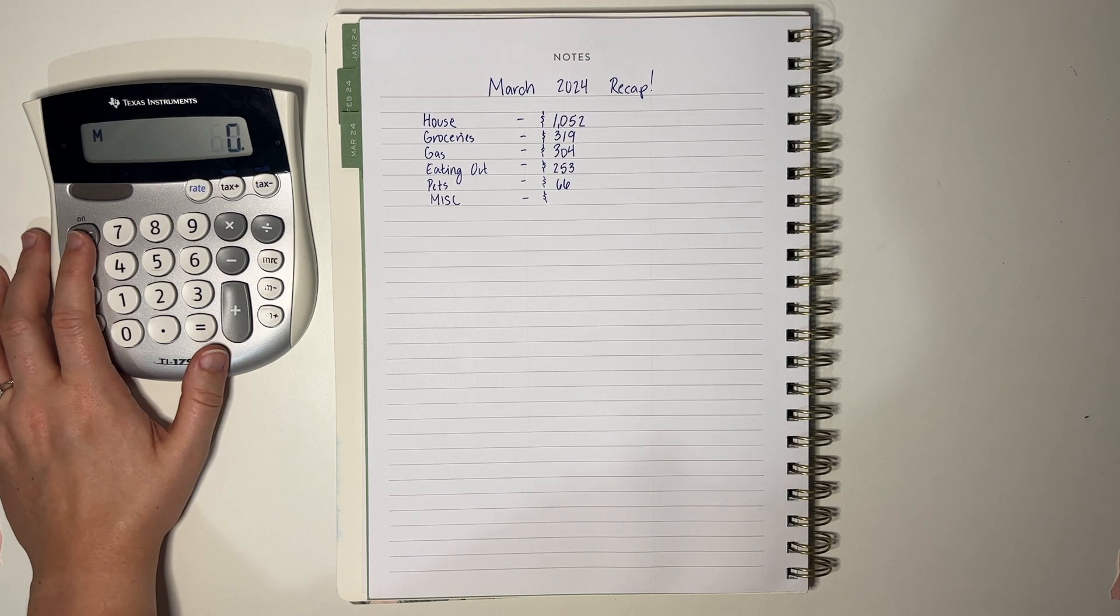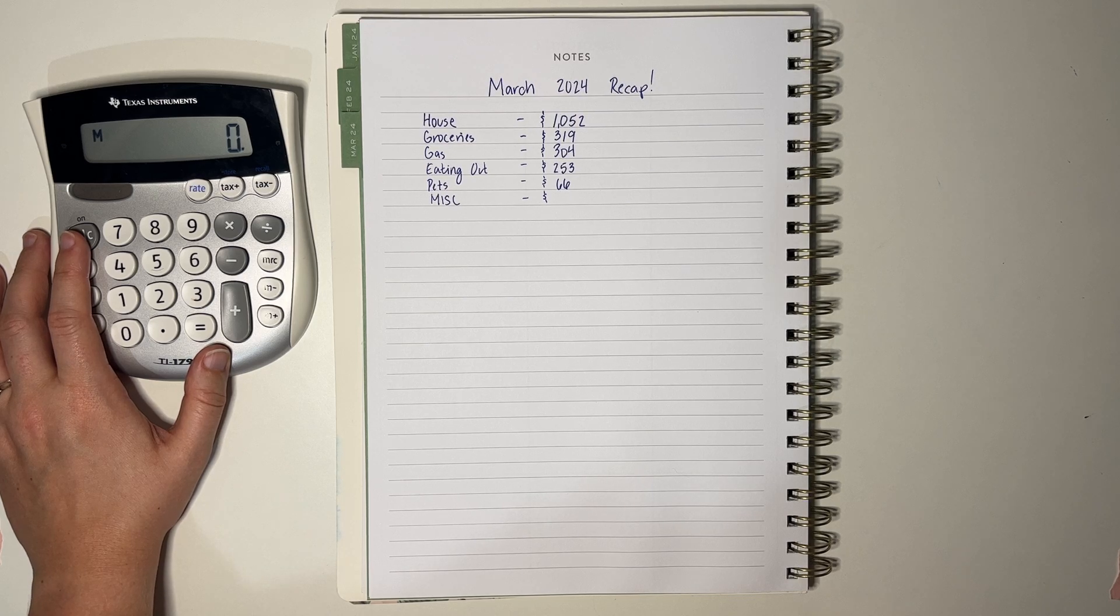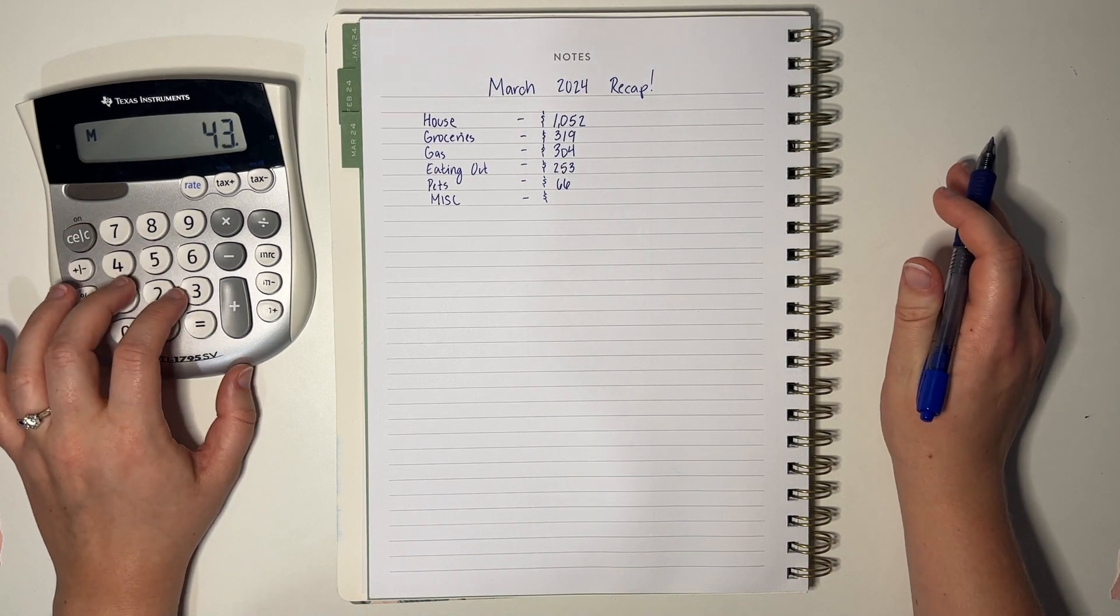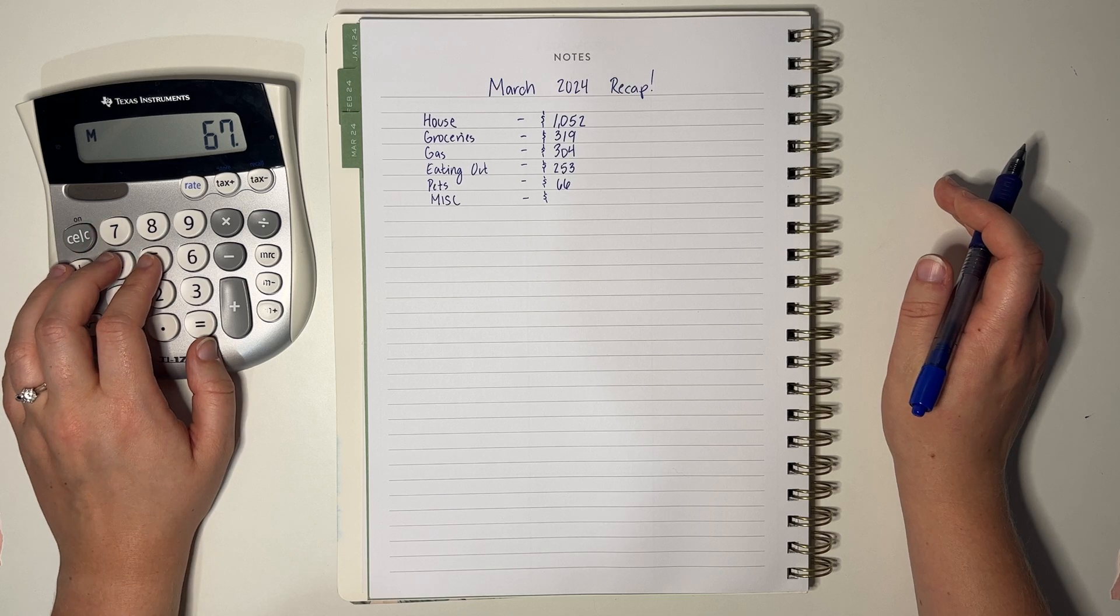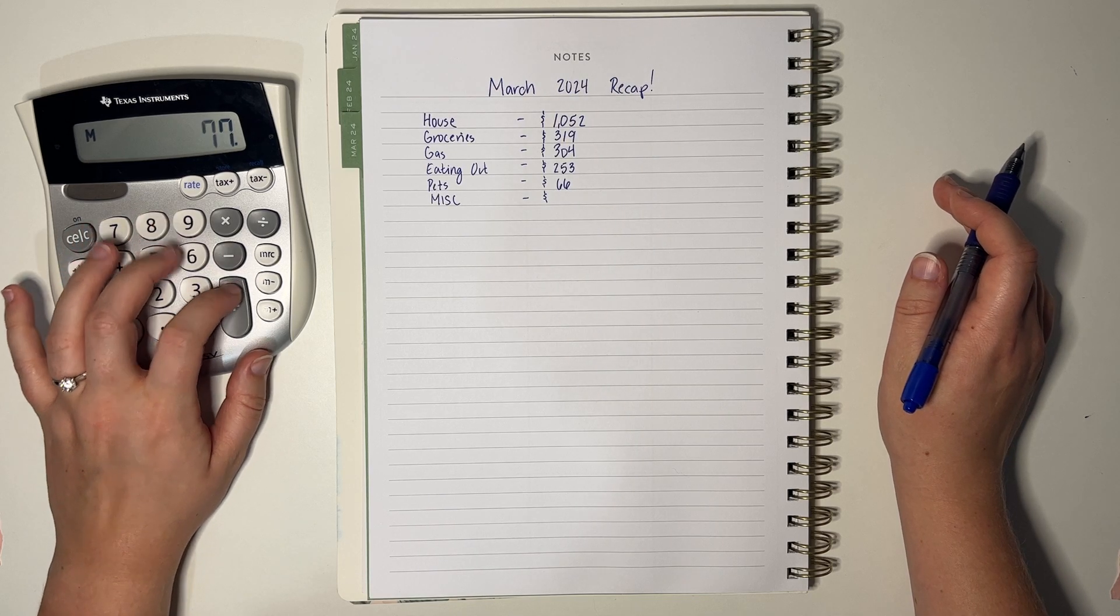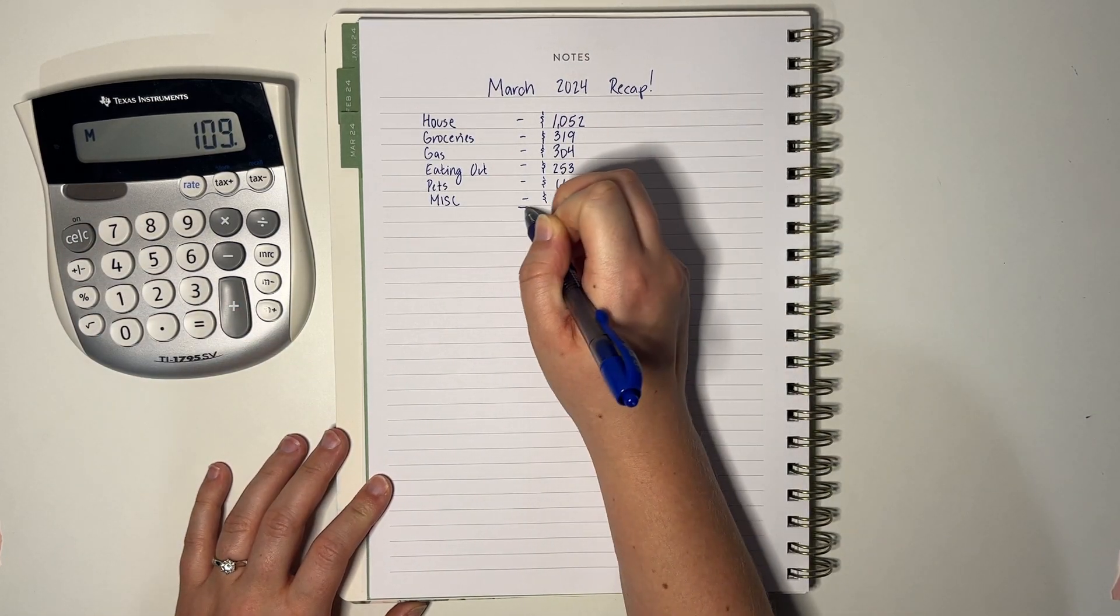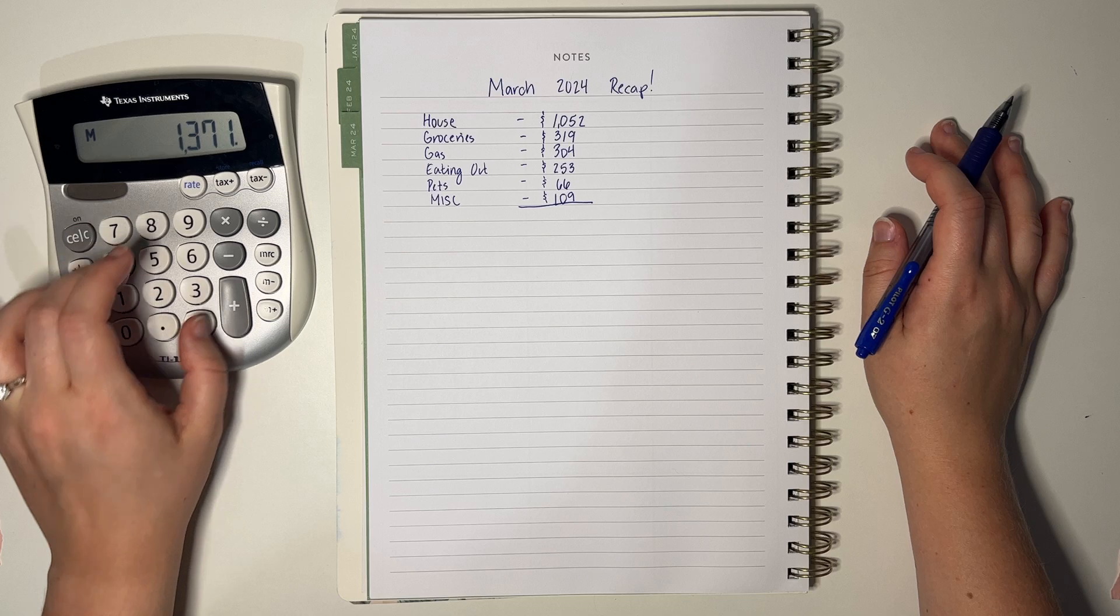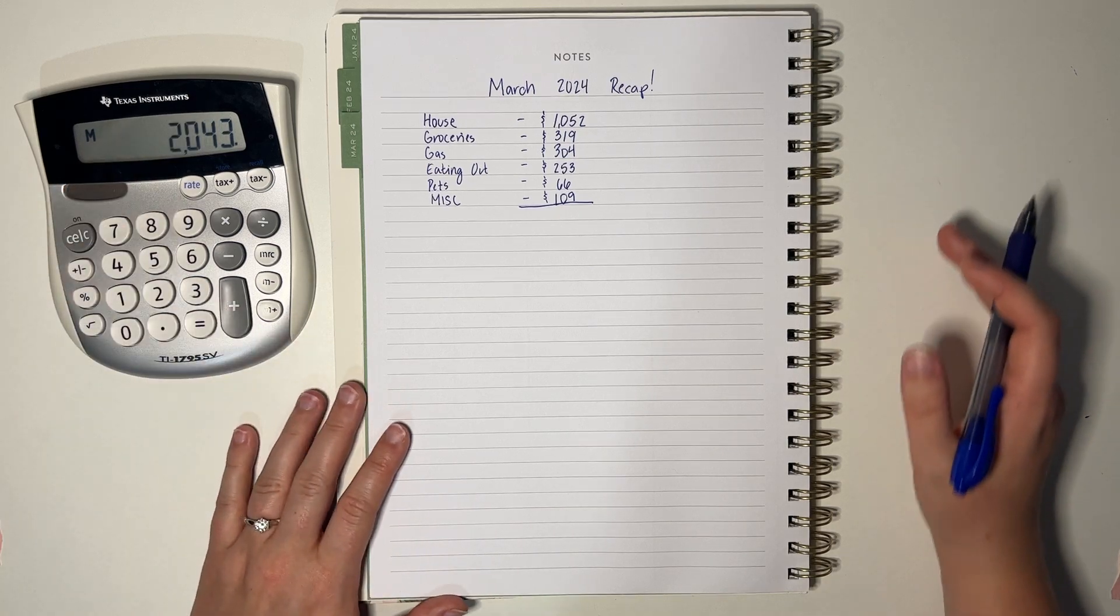And then miscellaneous is a whole lot of different stuff. I bought a game about a book. We went to Staples to print out tax forms. Got ice cream from UDF, stuff like that. But I'm just going to add all of that together because it's like unbudgeted things that just pop up. So two, I think that's an eight, 29 and three. So yeah, this is expensive. $1052, $319, $304, $253, $66, and $109. So interesting.